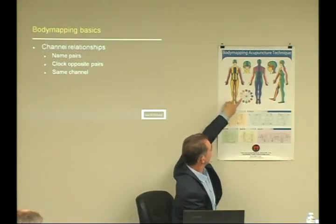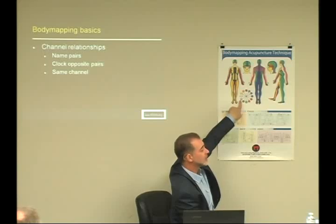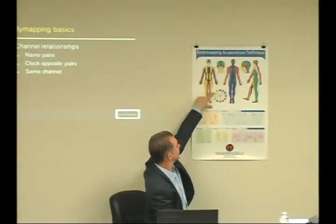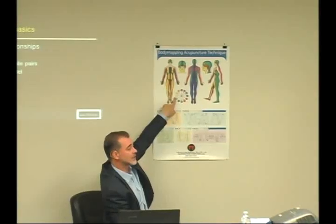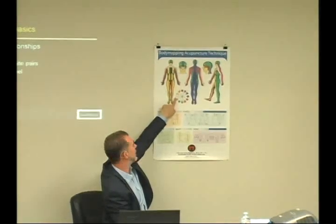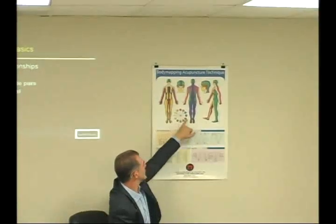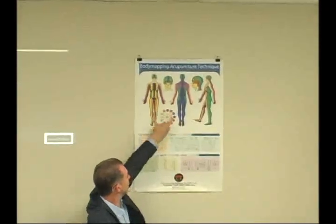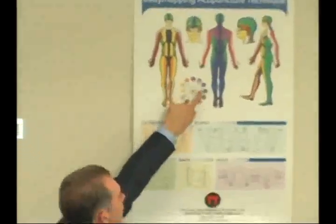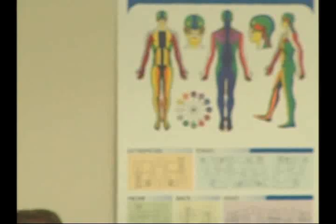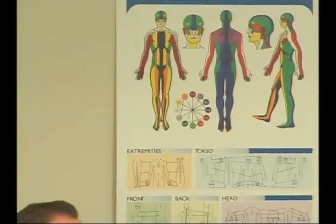So here we've got spleen and lung—Tai Yin. And then stomach and large intestine—Yang Ming. These are the lines going across this way on the chart, and they're color-coded together, which is nice. Everyone should know those name pairs. The second channel relationship is clock opposite pairs—these are pairs across the clock. The time of day isn't quite so important to me; the fact that they're on the opposite side is quite important. Heart is 11 to 1 at noon, and gallbladder is 11 to 1 at midnight—those relate to each other.